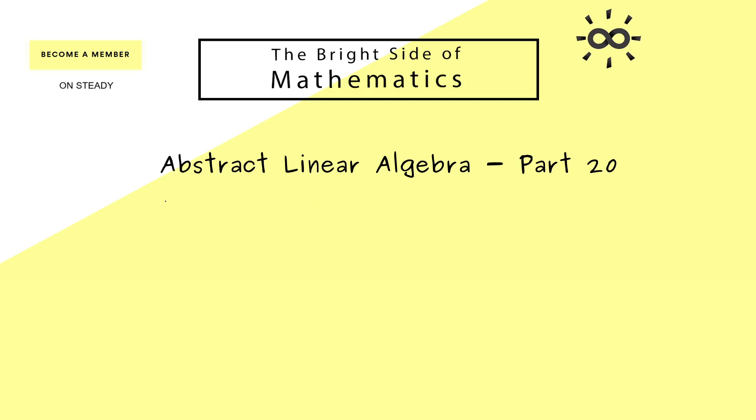Hello and welcome back to abstract linear algebra, the video series where we talk a lot about general concepts of linear algebra. For example, we used the last videos to talk a lot about the important concept of an orthonormal basis. And we've learned that such a basis is really helpful for calculations. Therefore, in today's part 20, we will talk about a procedure that gives us an orthonormal basis. This is the so-called Gram-Schmidt process.